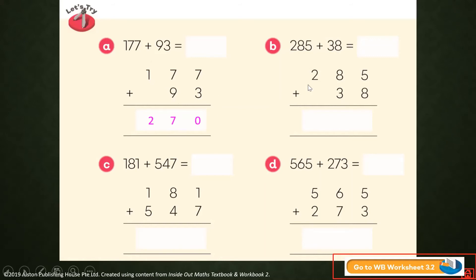Very good. Letter B: 285 plus 38. 5 plus 8 equals 13, carry 1. 1 plus 8 plus 3 equals 12, carry 1. 1 plus 2 equals 3. The answer is 323.